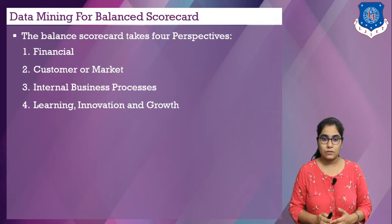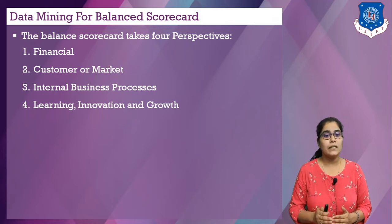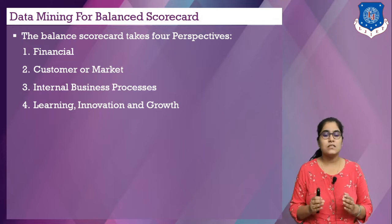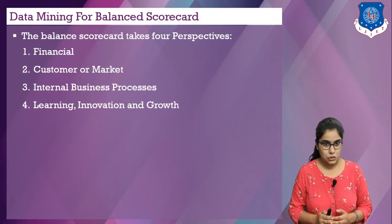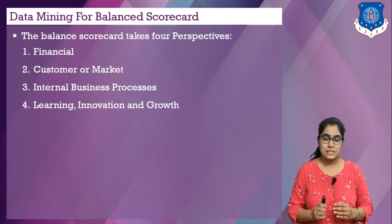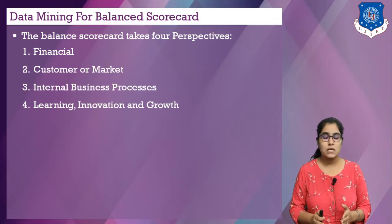The Balanced Scorecard is divided into four main areas, and a successful organization finds the right balance between these areas. Each perspective represents a different aspect of the business organization. The first is the financial perspective, consisting of measures such as rate of return on capital (ROI) and operating income. The second is the customer perspective, measuring customer satisfaction, customer retention, and market share. The third is the business process perspective, consisting of cost and quality measures. The fourth is the learning and growth perspective, consisting of employee satisfaction, employee retention, and knowledge management.